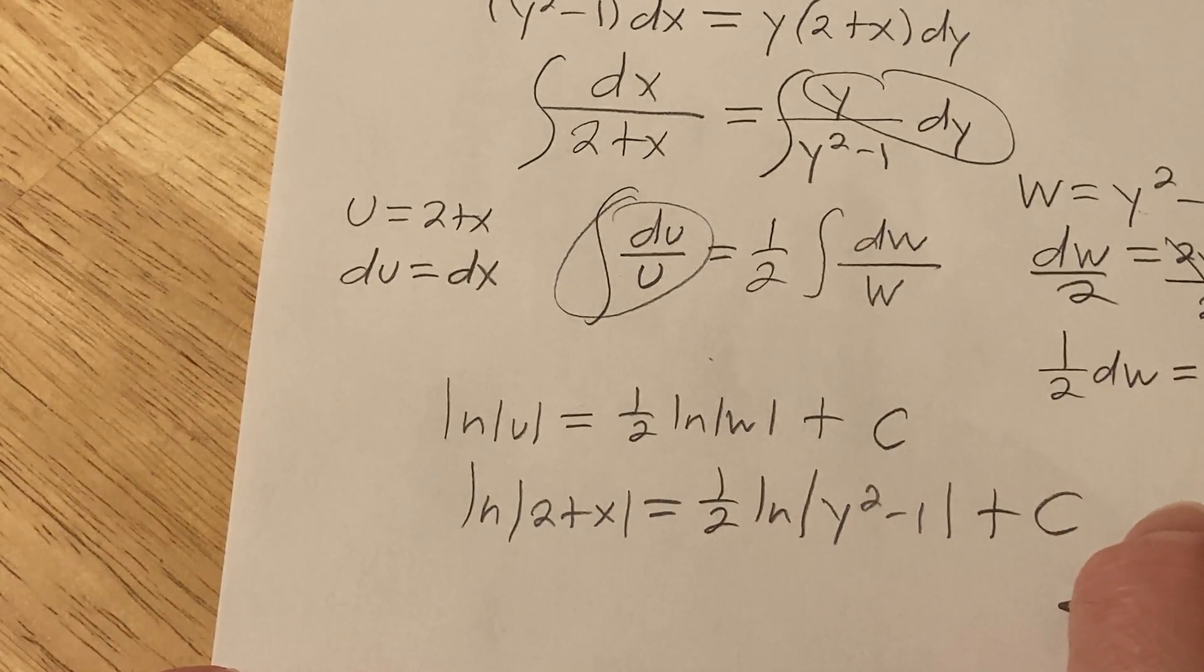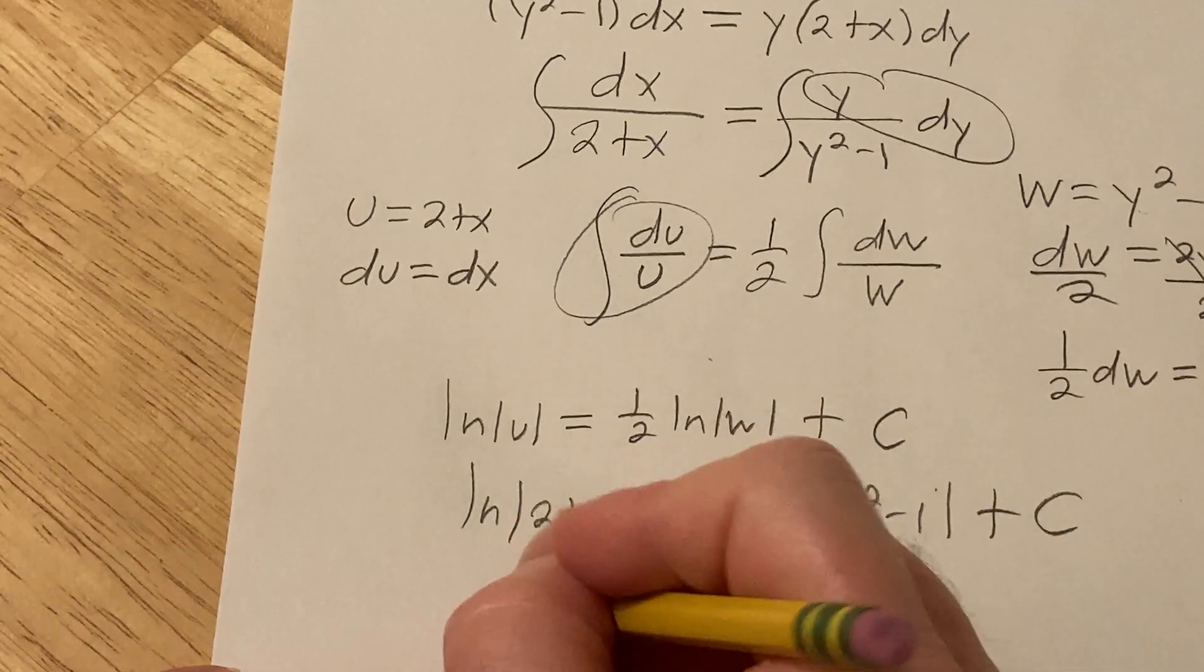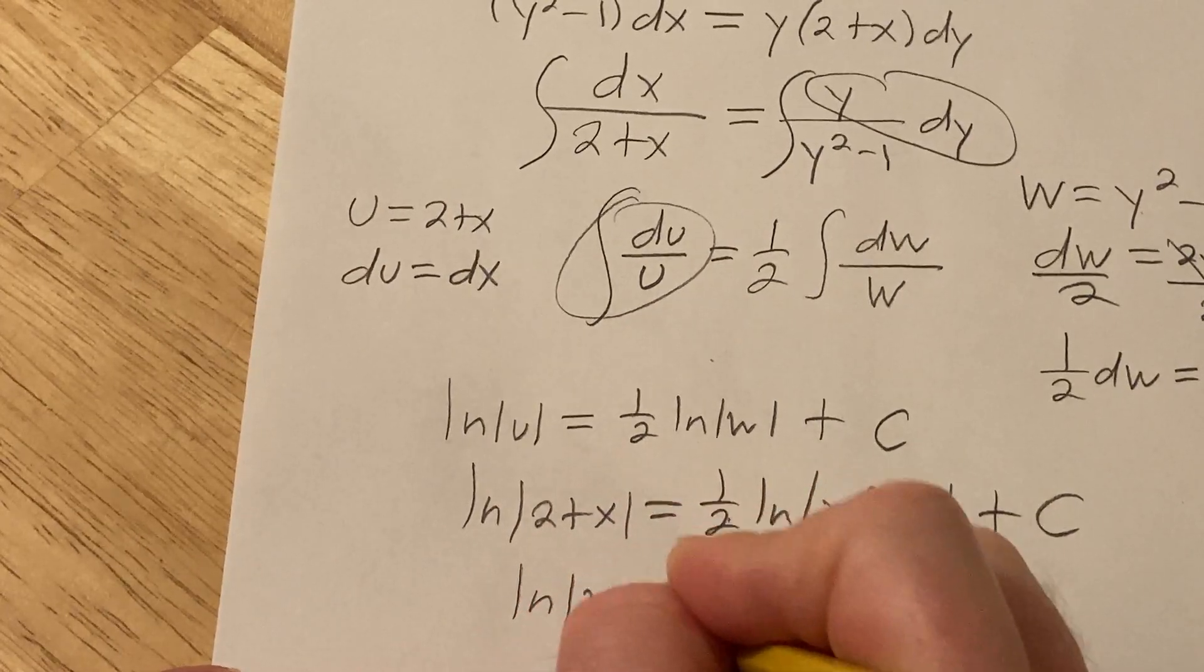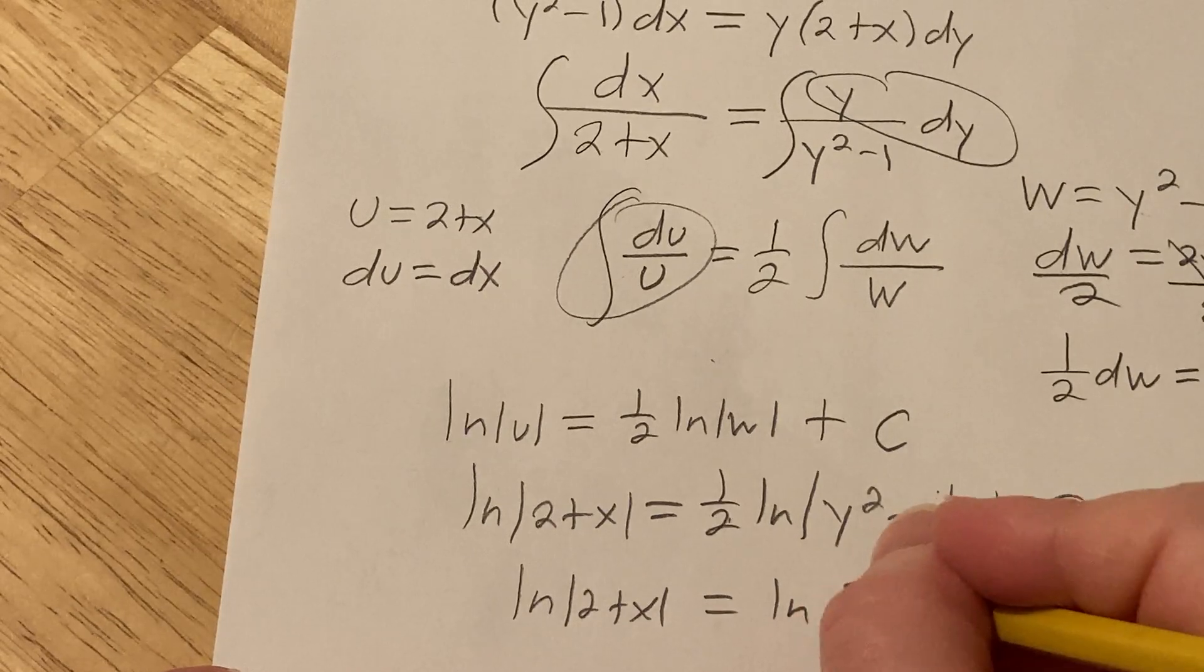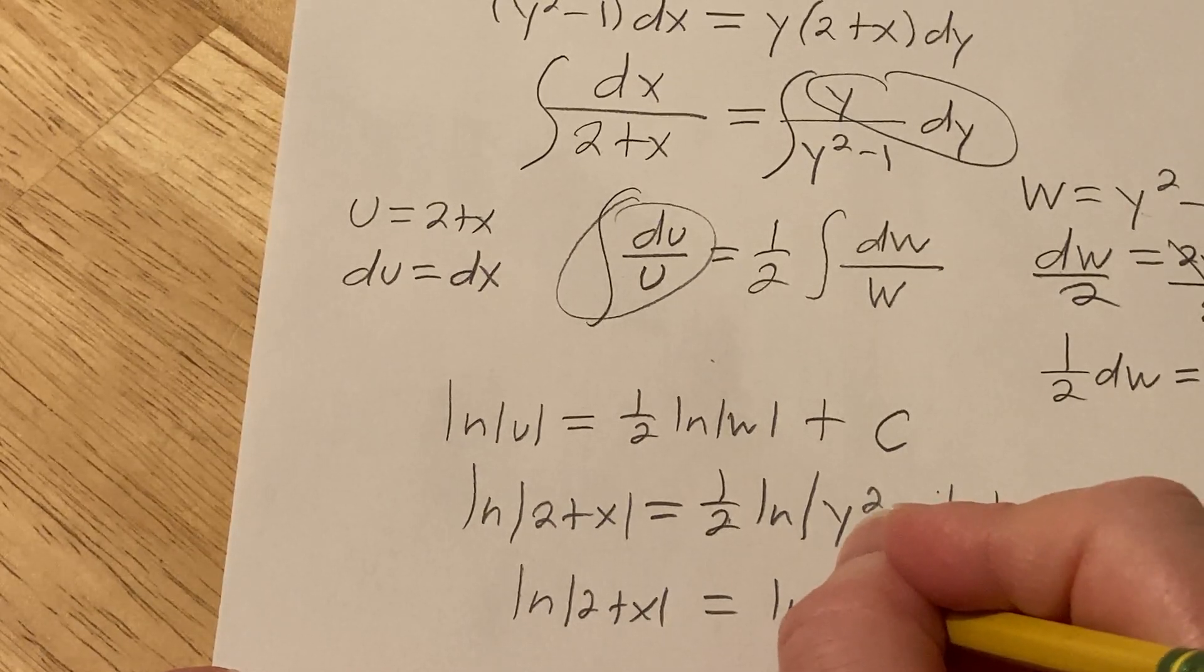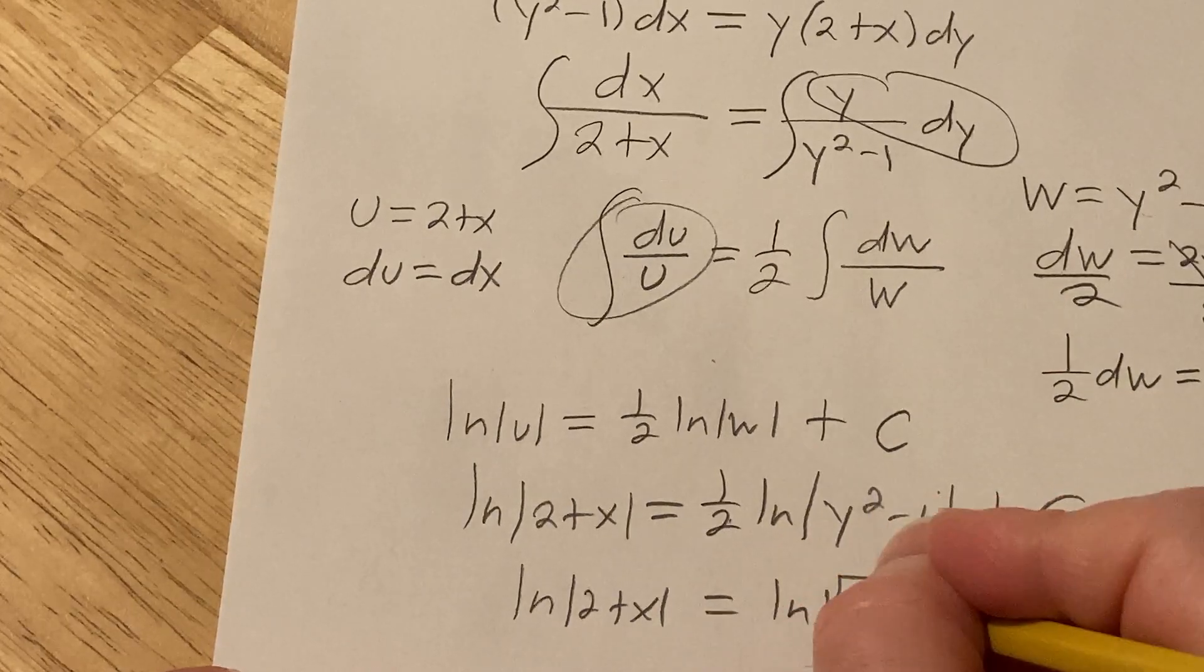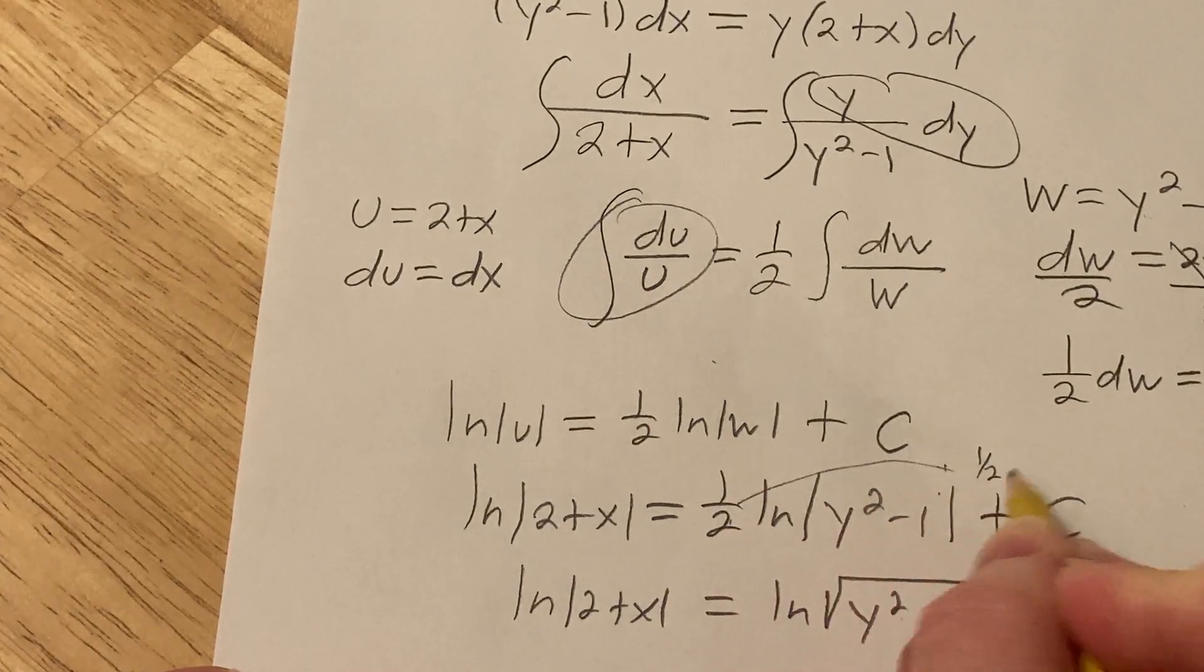We could keep going and try to get rid of the ln's. Let's do that. Why not? So you can take this 1 half and you can bring it up. And write it like this. It's going to be absolute value y squared minus 1. But you can write it as like that. Okay? Because when it comes upstairs, it becomes a 1 half.